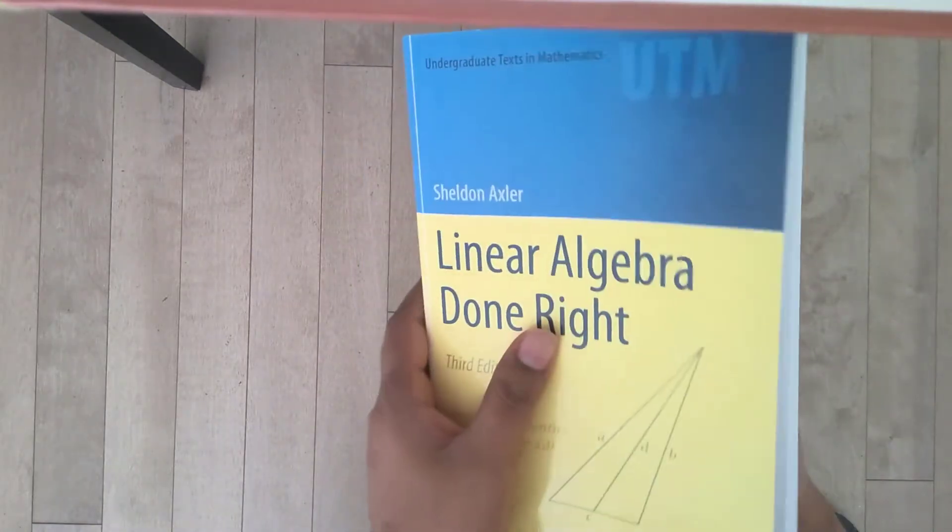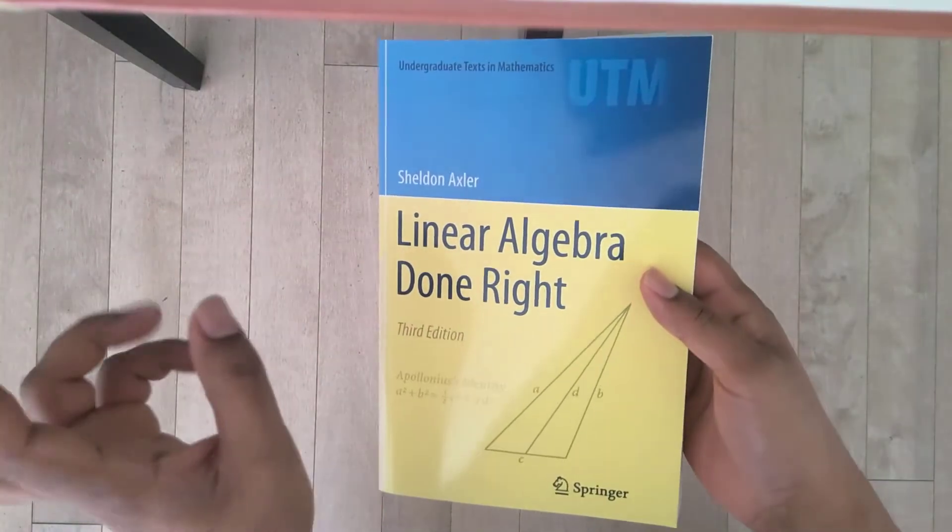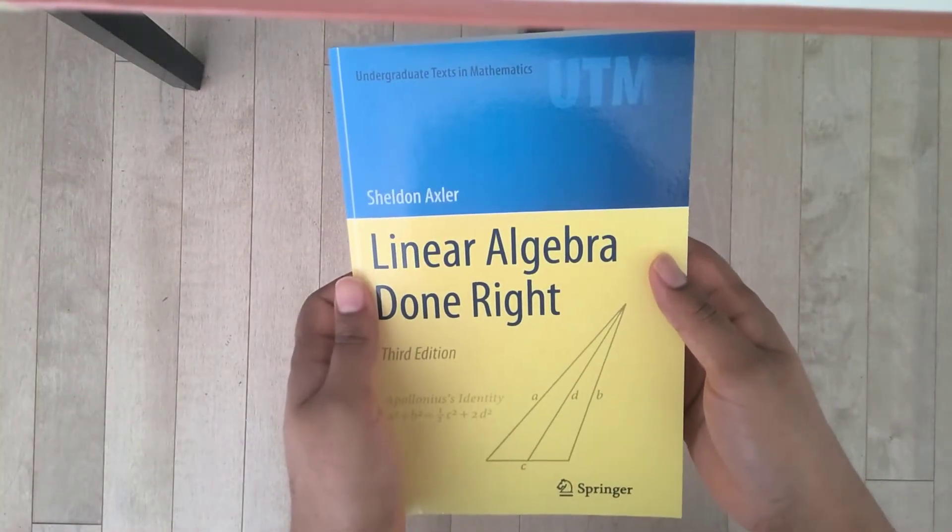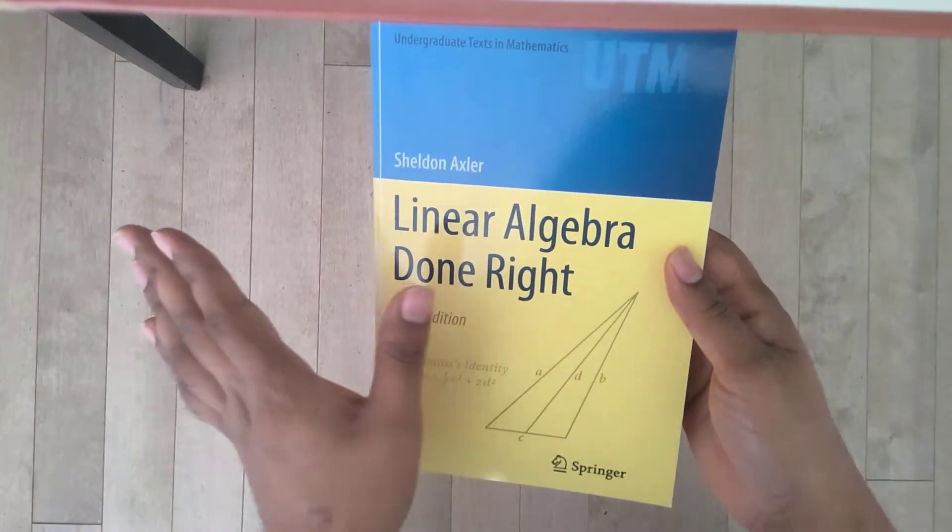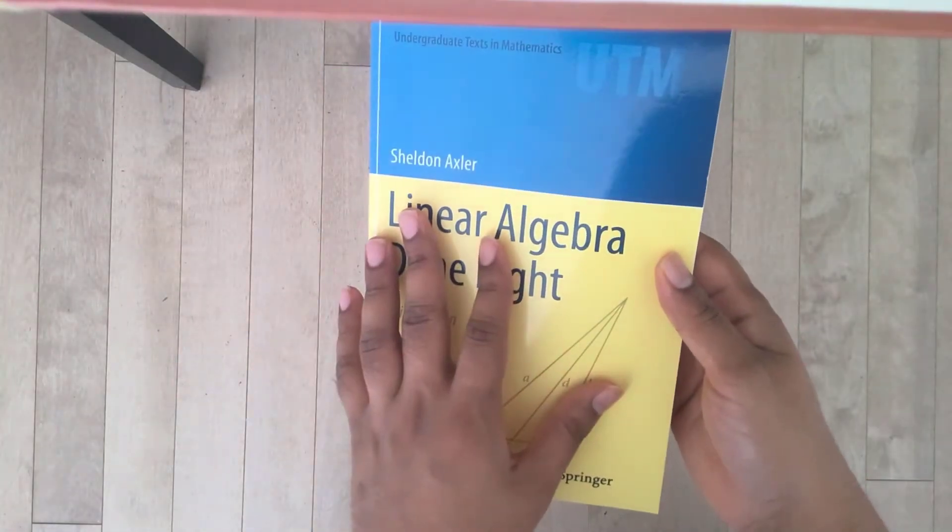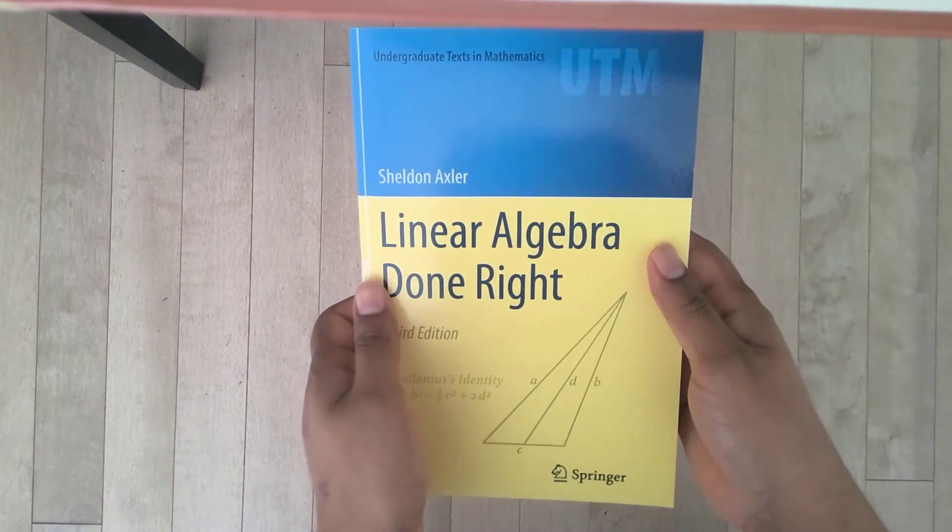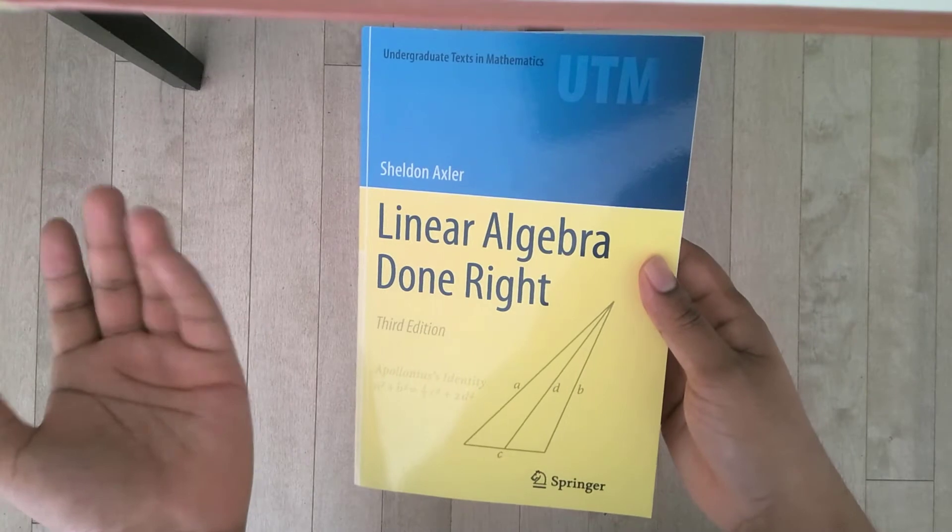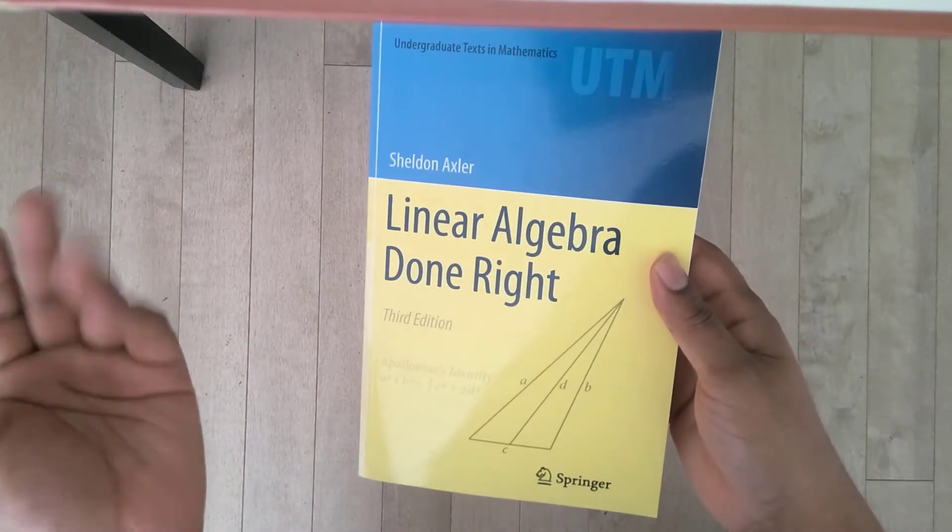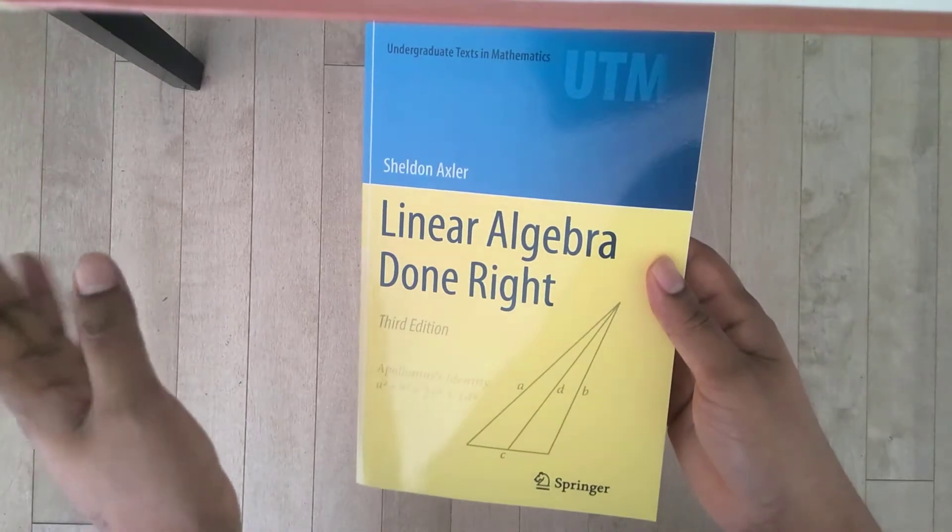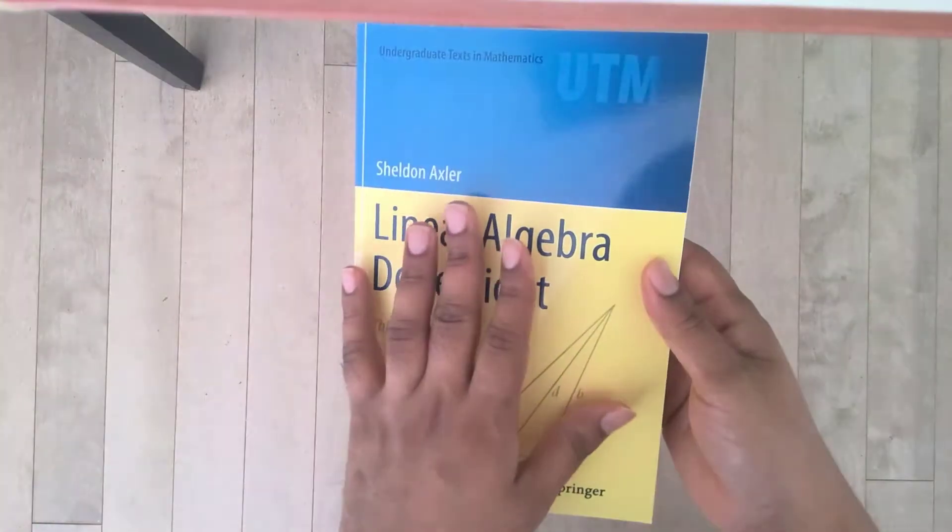This book assumes that you have maybe some bit of mathematical maturity. If you've taken calculus and definitely if you've taken any proof-based course, you have enough to follow this book. It doesn't assume that you've taken any linear algebra before. But obviously if you have taken a first course in linear algebra, like a more elementary treatment where you deal with matrices and vectors in R squared and R cubed, you have enough background to get into this.